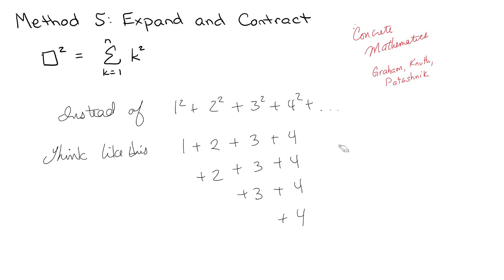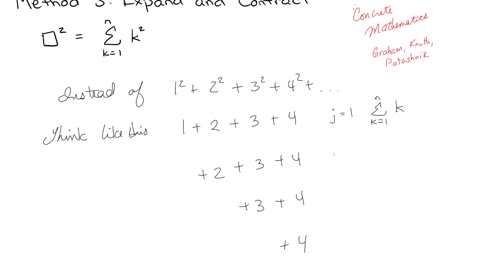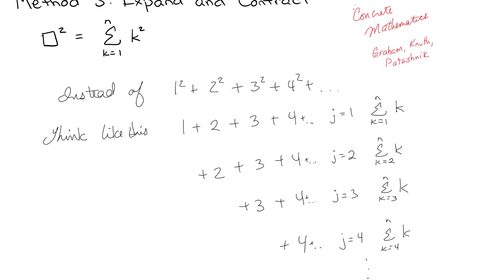We're actually going to add them, but instead of adding by columns, we're going to add by rows. For the first row, j=1, we do a summation from k=1 to n of k. For the second row, j=2, k starts at 2 and goes to n. For the third row, k starts at 3; for the fourth row, k starts at 4 and goes up to n, etc. So we can write that as a summation.